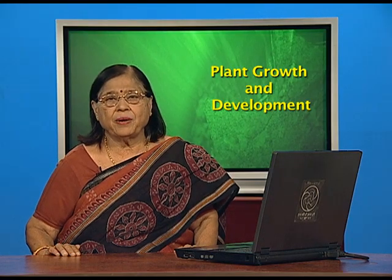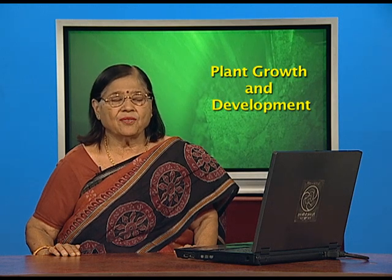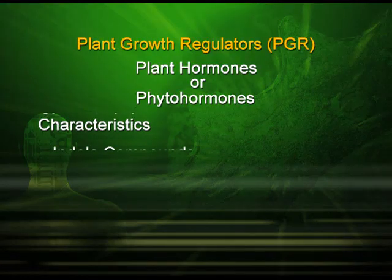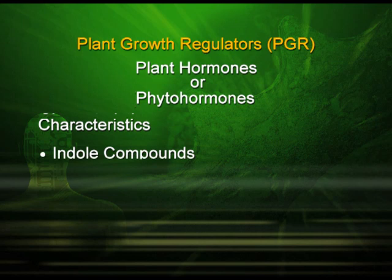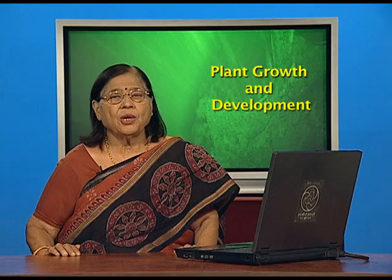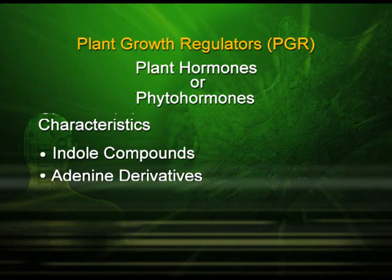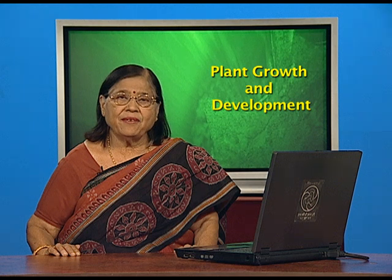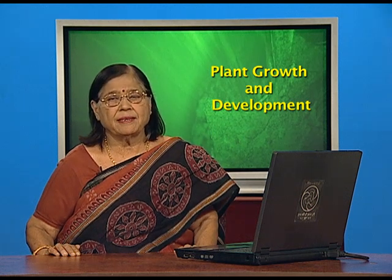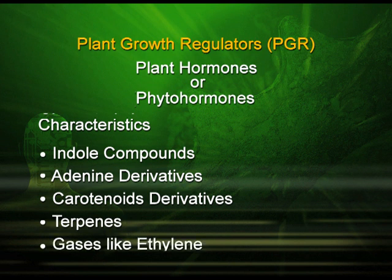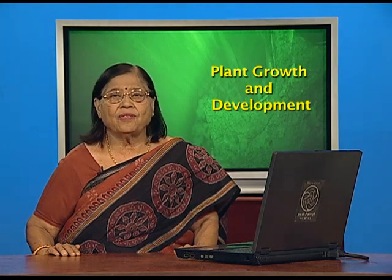What may be the chemical nature of these regulators? After all, these are chemicals in one sense of the word. Major characteristics of these regulators are that they may be indole compounds, or they may belong to adenine derivatives — you have heard about adenine in connection with DNA and RNA. They may be carotenoid derivatives, terpenes, or they may be in a gaseous form like ethylene.